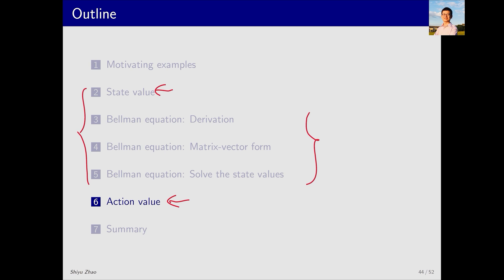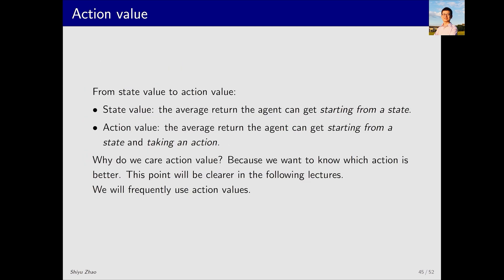I put action value towards the end because it is necessary to understand state value first before introducing action value. What are the differences and connections between state value and action value? State value refers to the average return the agent can get starting from a particular state. Action value refers to the average return the agent can get starting from a state and taking an action. We will clarify this concept in detail later. Why do we care about action value? When there are multiple actions in a given state, which one should I choose?